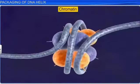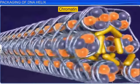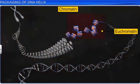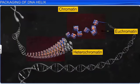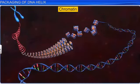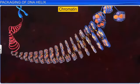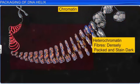It is the nucleosomes that make up the repeating unit in chromatin, the thread-like bodies present in the nucleus. The chromatin fibers are of two types: euchromatin and heterochromatin. In a typical nucleus, euchromatin fibers of 30 to 80 nanometers in diameter are loosely packed and stain light. On the other hand, heterochromatin fibers of about 300 nanometers in diameter are more densely packed and stain dark.